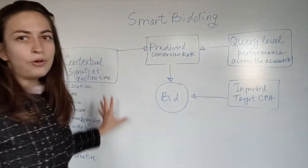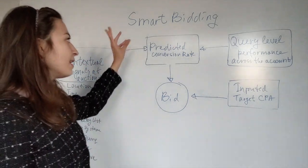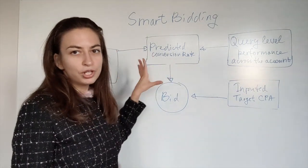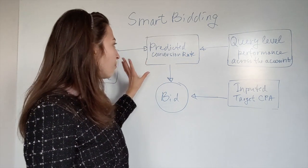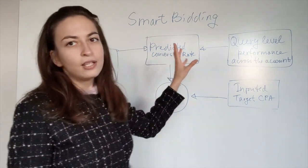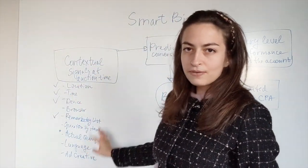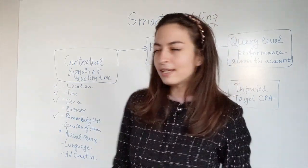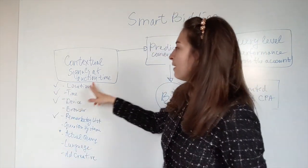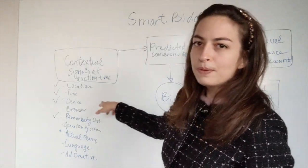Once you have all these signals, what happens is Google is using machine learning technology to predict conversion rate. Conversion rates are predicted on each of these signals and the different combinations of signals: how likely it is for people in central London at 2 p.m. of the day...